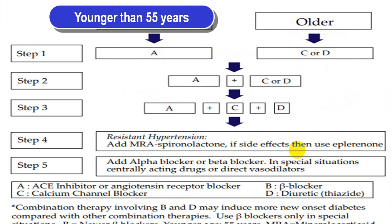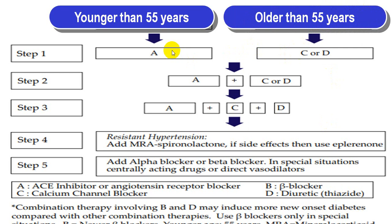Per Indian guidelines, for persons younger than 55 years: step one is ACE inhibitor; step two is ACE inhibitor plus either CCB or diuretic; step three includes all three. For older individuals above 55 years, CCB or diuretic becomes monotherapy as step one, and in step three — ACE inhibitor, CCB, and diuretic — chlorthalidone is now preferred over thiazide.